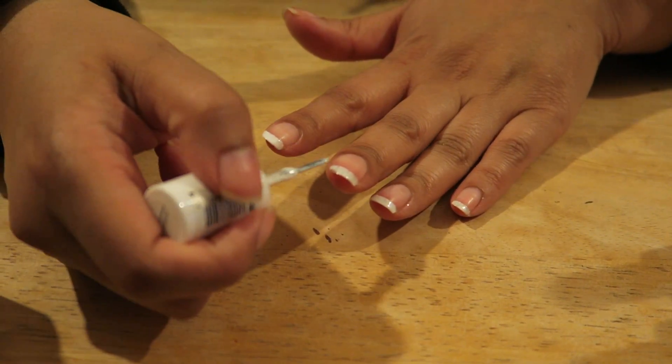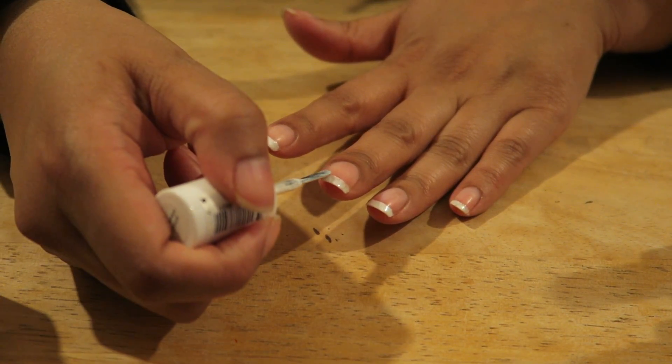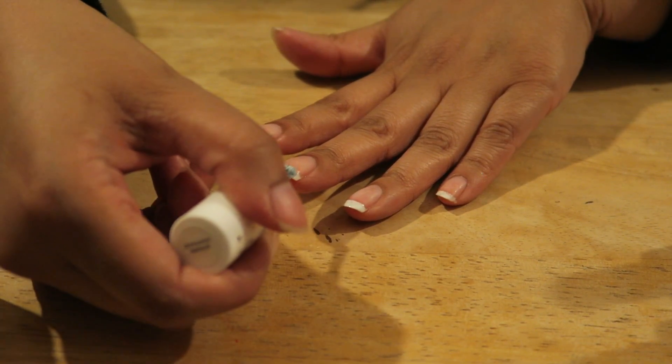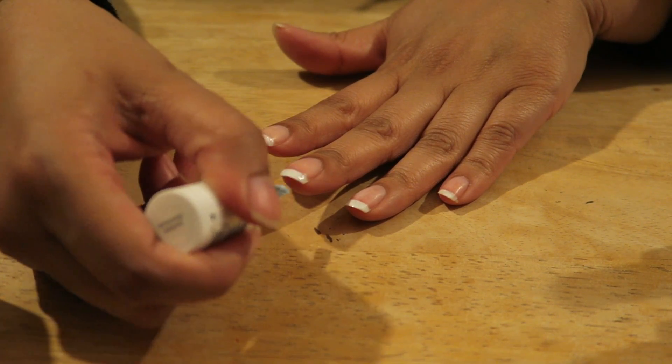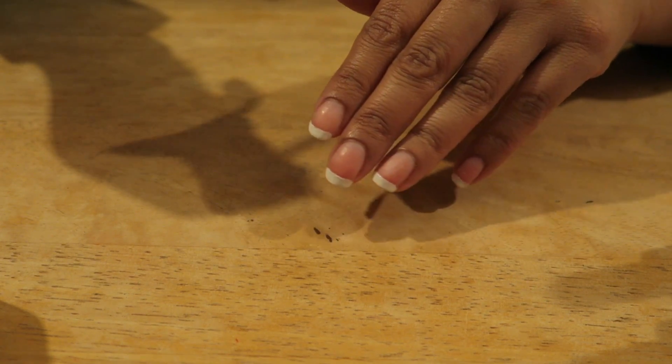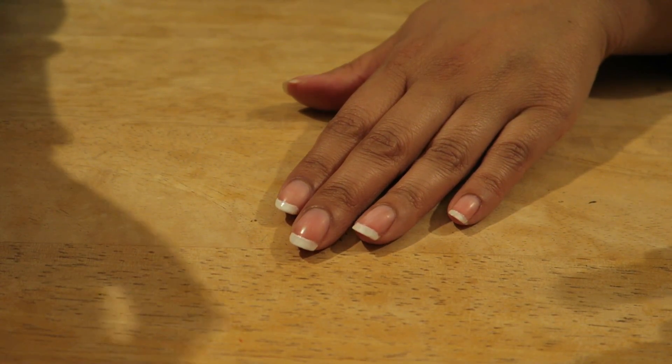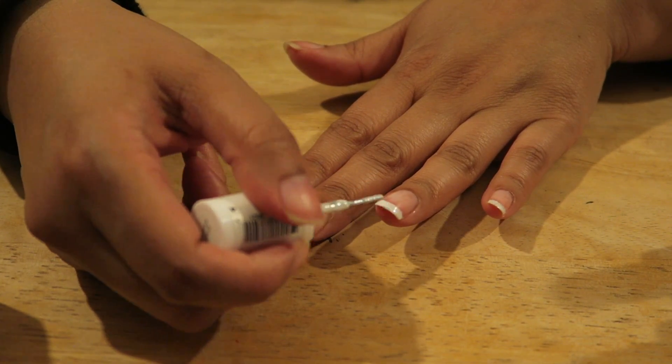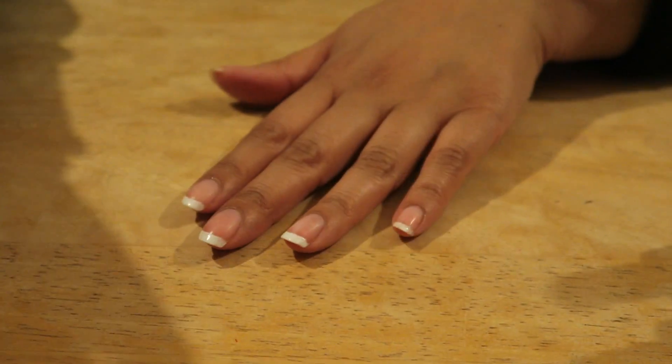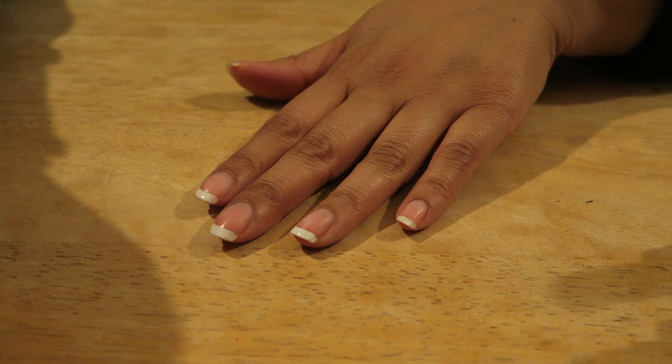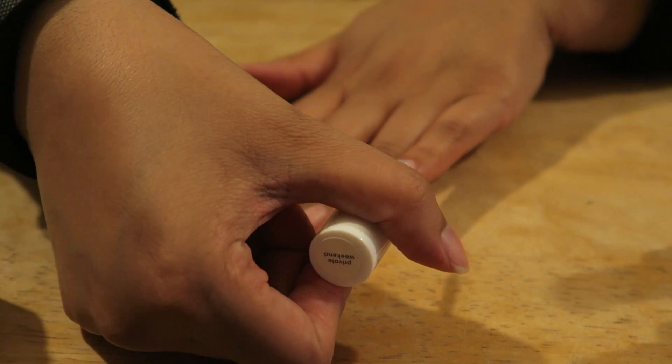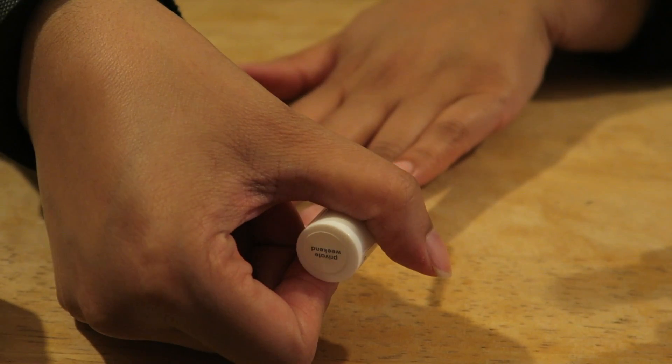And we do the same again for the others. So it's one, two, and then three, and then just go over any sections that you think you need to. So you can see that there, and just do the same. One, two, three. And here we go, one, two, three.